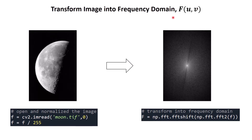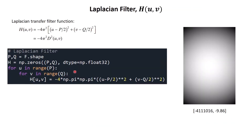The first step: we transform our image into frequency domain. Here I open this moon image using the OpenCV function cv2.imread and normalize this image by dividing it with the maximum value 255. Using the NumPy function np.fft.fft2 I transform this image into frequency domain, and then using np.fft.fftshift I shift the low frequency into the center.